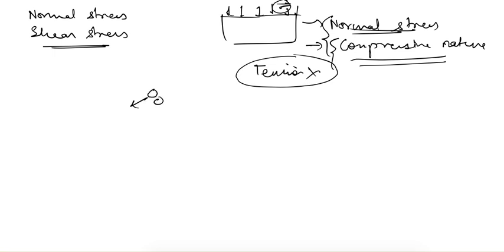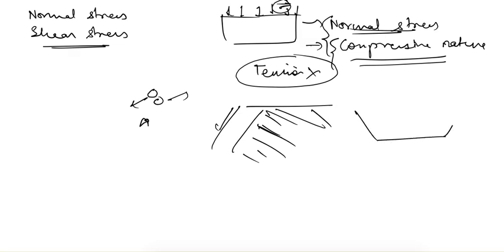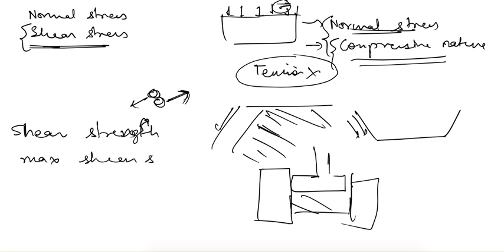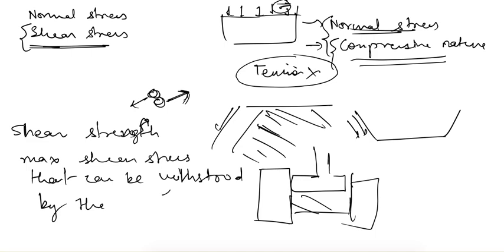Whenever there is a case of sliding — that means whenever a part of a soil mass tries to move away from the rest of it, in the case of a dam embankment, canal, slope, or foundation — there are shear stresses. Shear strength is the maximum shear stress that can be withstood or resisted by the soil mass.